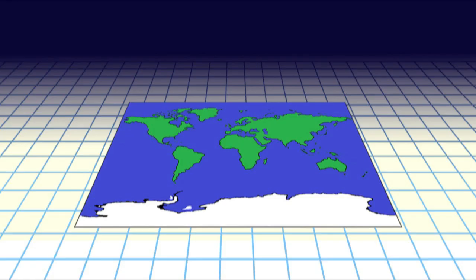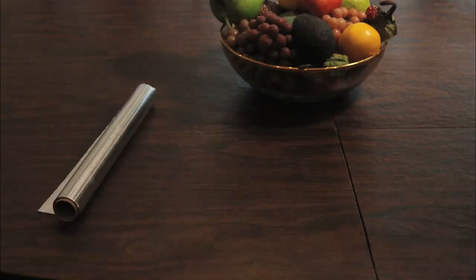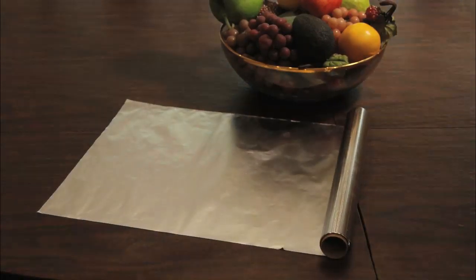A map is great because you can keep it rolled up when you don't need it and lay it flat when you do, like tinfoil. This transformation doesn't change the size or shape of the continents. It's always the same map.